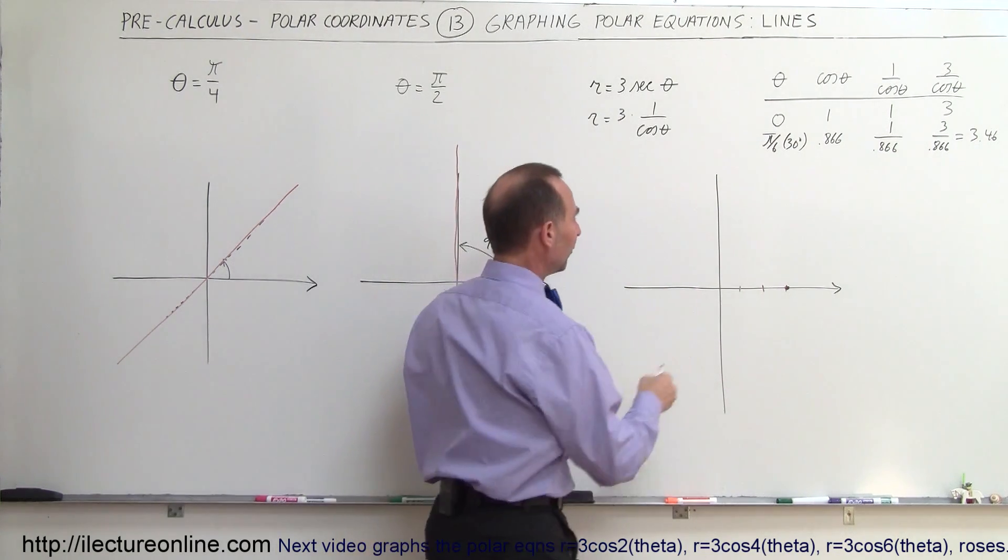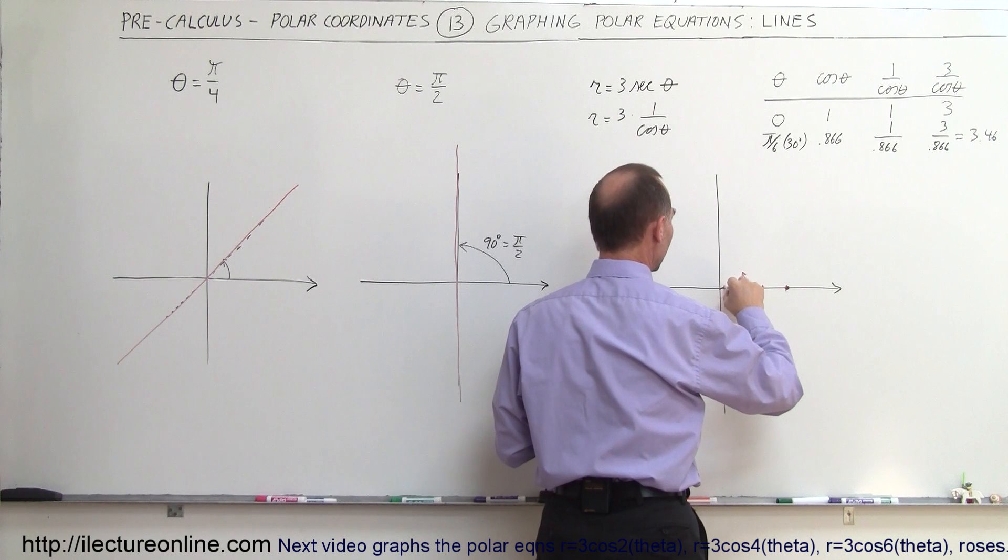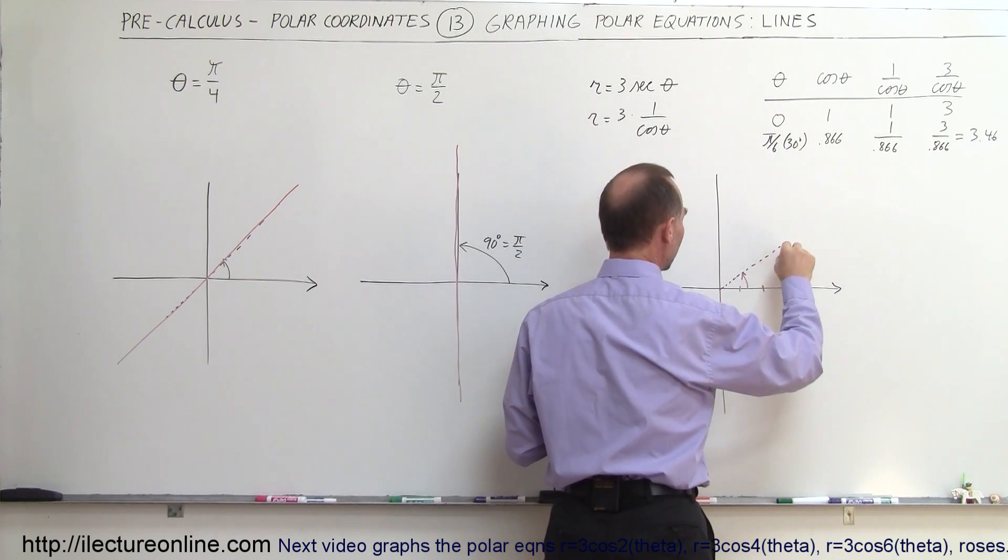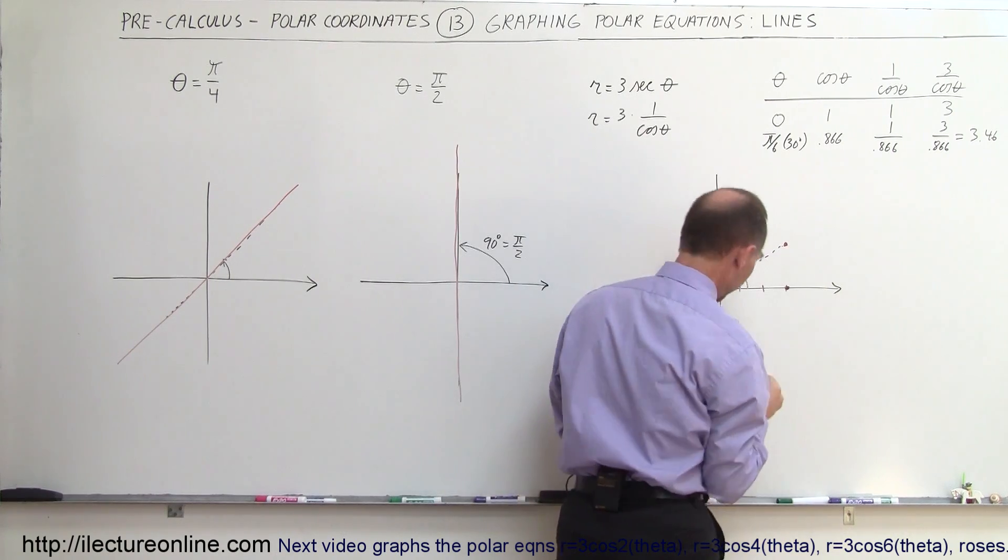So that would be equal to 3.46. And then if we plot that, at an angle of 30 degrees, that would be an angle this way, we draw a dotted line here. And notice that this distance, if it's 3.46, would put a dot right about there.